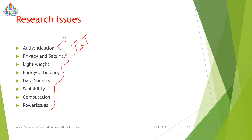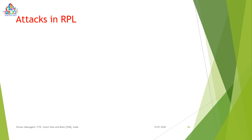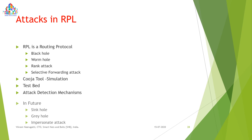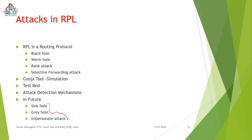During my PhD, I researched the RPL protocol. I implemented detection mechanisms for black hole, wormhole, rank hole, and selective forwarding attacks using the Cooja simulation tool. After simulation, I conducted real-time testbed experiments by dumping all the code and detection mechanisms onto the testbed, and it worked well. Future work in this area may include sinkhole, gray hole, and impersonation attacks — there is a lot of research scope here.